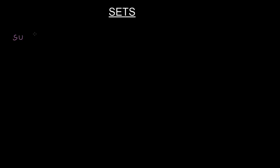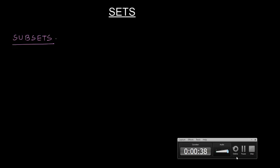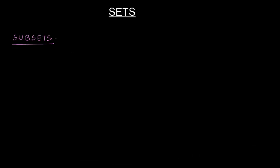After having discussed the types of sets, let us come to a new concept called subsets of a set. Let me proceed first with an example, then we'll go to the formal definition. Suppose I have a set A with elements 1, 2, 5, 7 and B is another set with elements 7, 2, 1, 3, 9, 5.